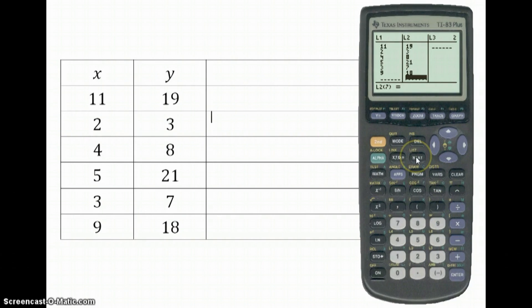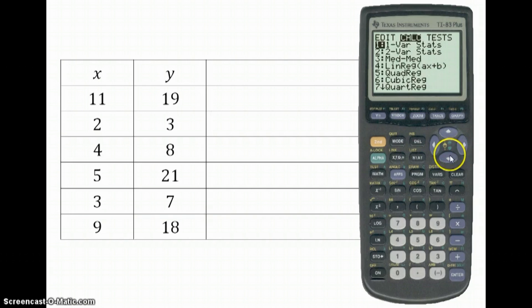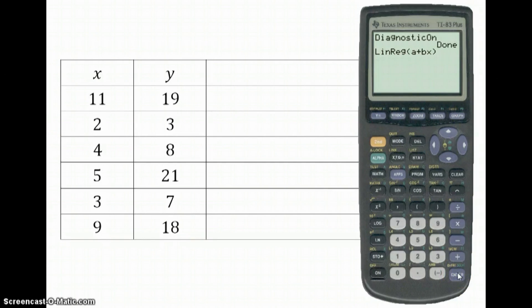Now you want to go to Stat again. And you want to go to the right. And you want to go to LinReg. Now there's already this one here, the Ax plus B. But I want you to go to A plus Bx. This is the one that we use for the linear regression. And this is the one we use here. So number 8, LinReg, A plus Bx. Press Enter. Then we want L1 and L2. So 2nd, 1 for L1. Comma, 2nd, 2 for L2. Press Enter.